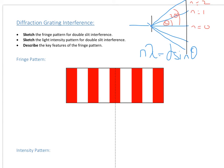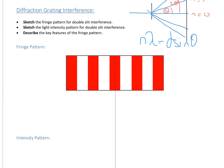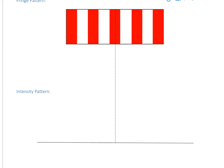Looking at the intensity pattern for the diffraction grating, the peaks are much finer, sharper spikes than with the double slit. The drop-off in intensity tends to be smaller, so the peaks stay higher for longer as you move from the centre. We still have the highest intensity in the centre, but these are much thinner, sharper spikes compared to the double slit interference pattern.